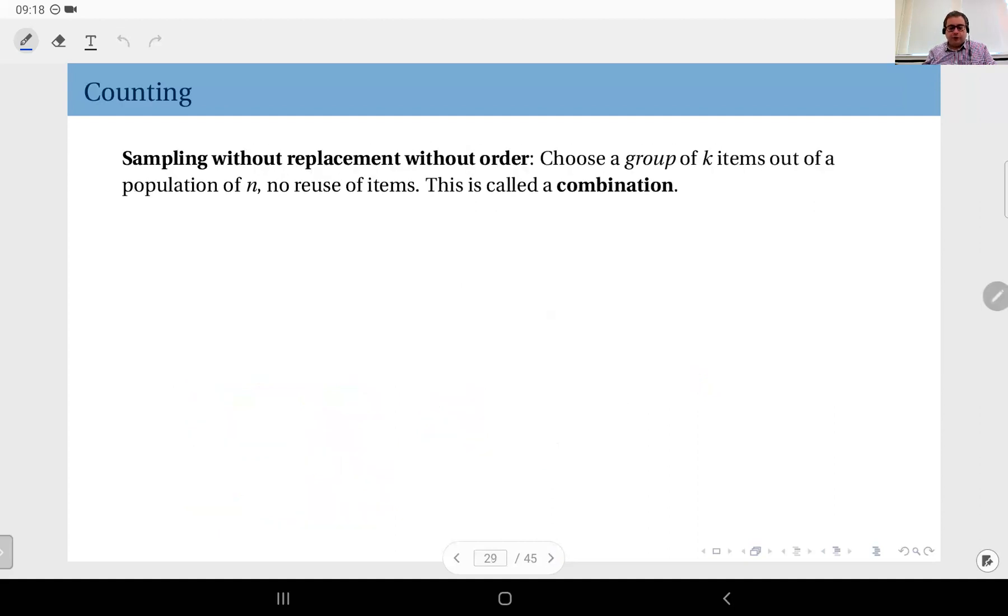Okay, so this we call sampling without replacement without order. Now again we do not have replacement, so no reuse of items. However, now we also do not care about the order. Choose a group of k items. You see this is no longer a sequence. It's a group because we stopped caring about the order. So it's a group of k items out of a population of n. No reuse of items, and this we call a combination.